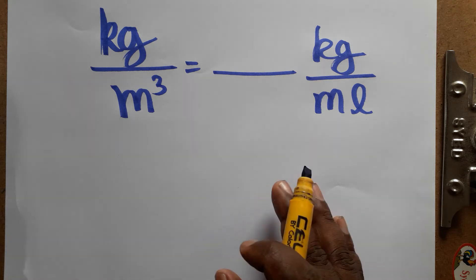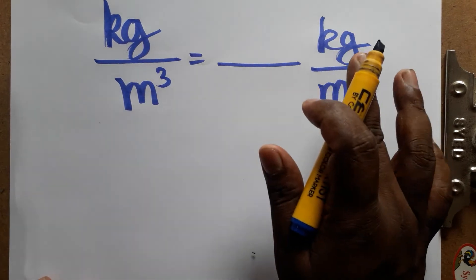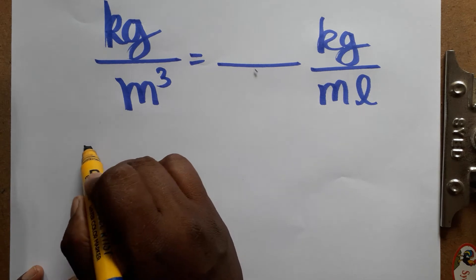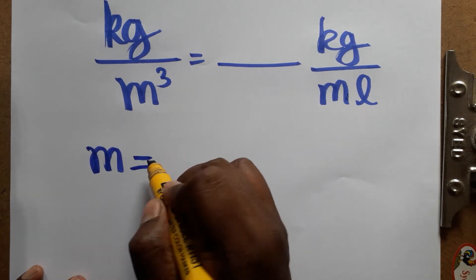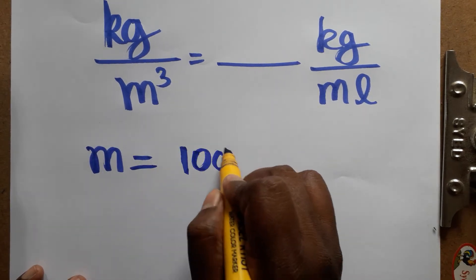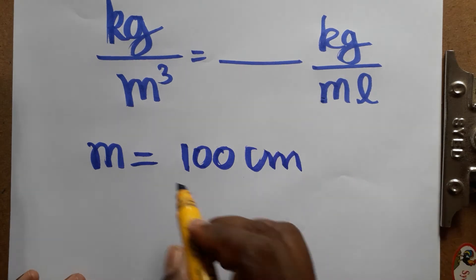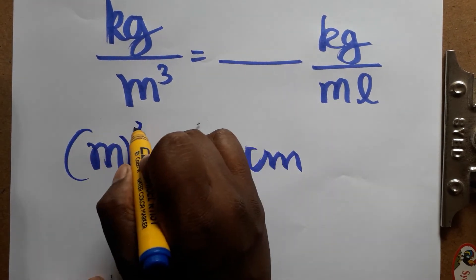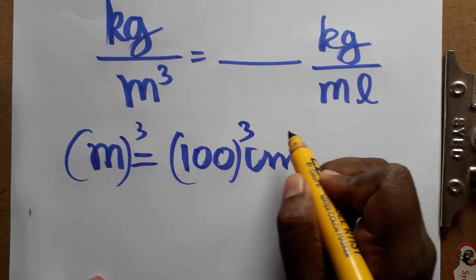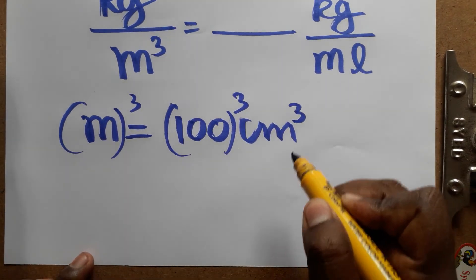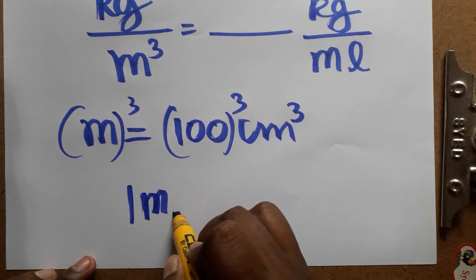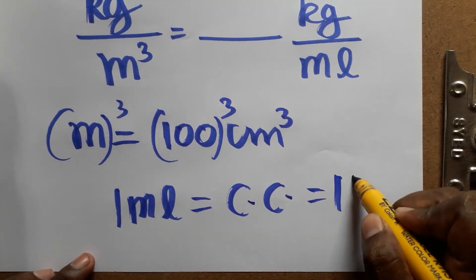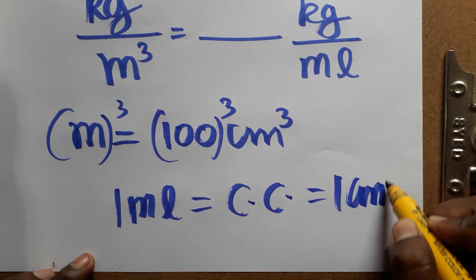We are not going to convert kg — we are going to convert meter into centimeter. One meter is 100 centimeter, so meter cube is 100 cubed centimeter cube. And as we know, one ml is equal to one cc, that is one centimeter cube.